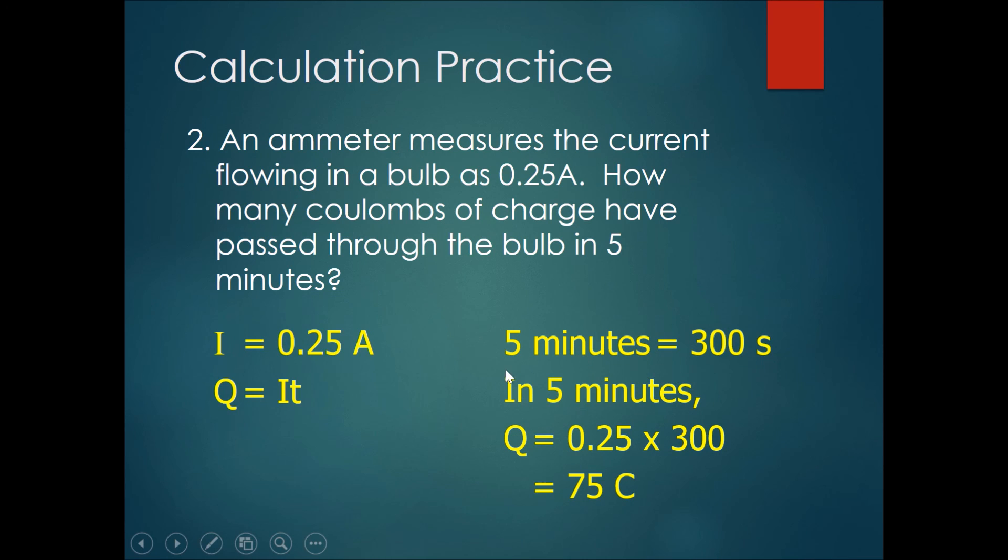Therefore using the formula Q equals I times T, in five minutes Q the amount of charge equals 0.25 amperes times 300 seconds which gives you 75 coulombs.